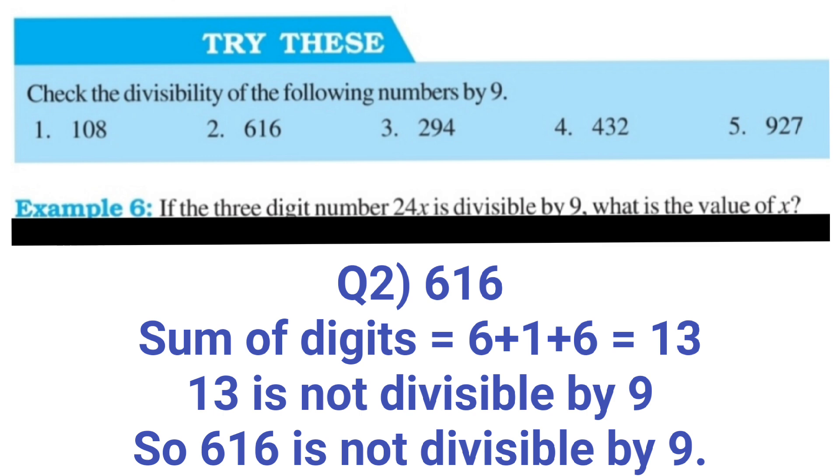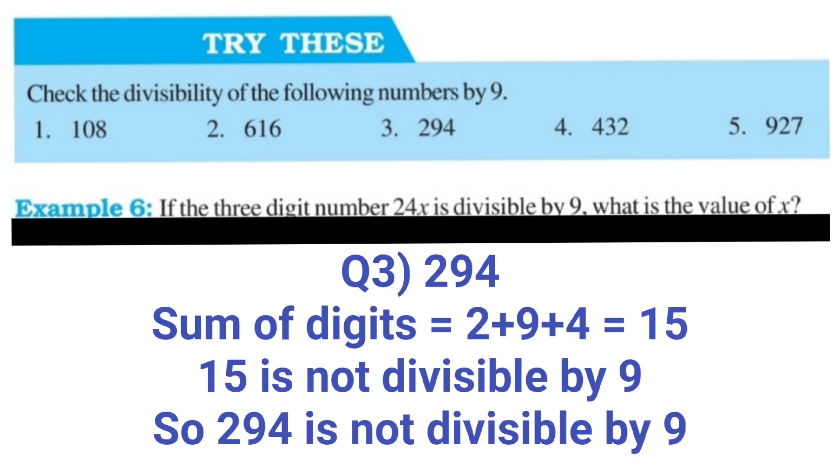After that question number 3, 294. Now you can see that first of all, again, we will find the sum of digits of 294. 2 plus 9 plus 4, 2 plus 9, it is 11 plus 4, it is 15. So 15 is also not divisible by 9. So 294 is also divisible by 9.